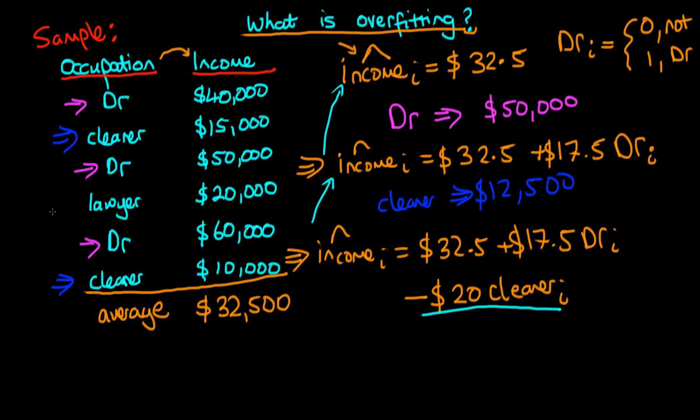However, we also notice that we have one lawyer in our sample who earns $20,000, and so what we might do is include in our model an extra term which accounts for whether or not an individual is a lawyer. Because this lawyer who we have in our sample earns $20,000, we might include a corrective term which is basically just taking off $12,500 times a dummy variable lawyer, which will exactly allow us to replicate this individual's income using our model. But what do we think about this last model that we've created, which has got this extra term? I'm going to put it in a box so we can differentiate it with the one before that.